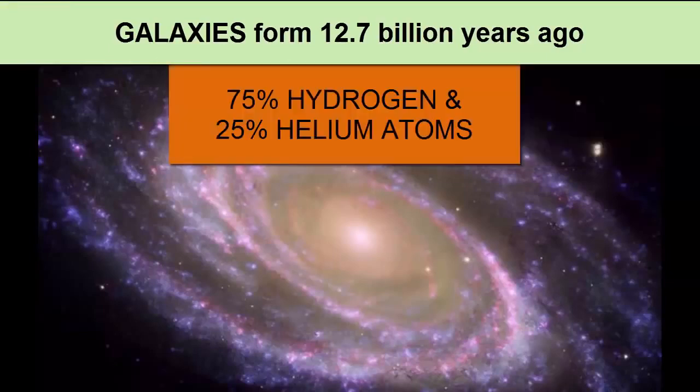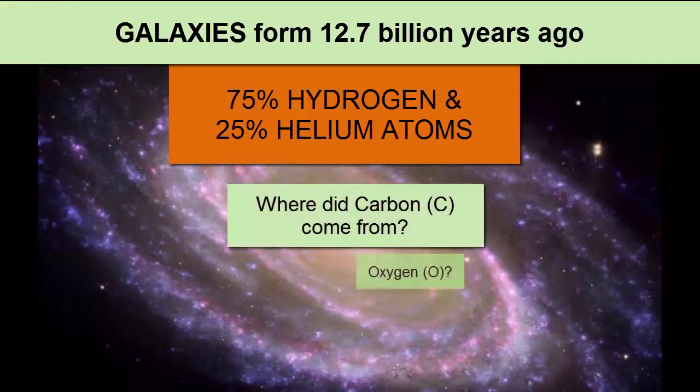So now we have stars, solar systems, and galaxies. What about rocky planets? And what about the atoms other than hydrogen? Where did they come from?